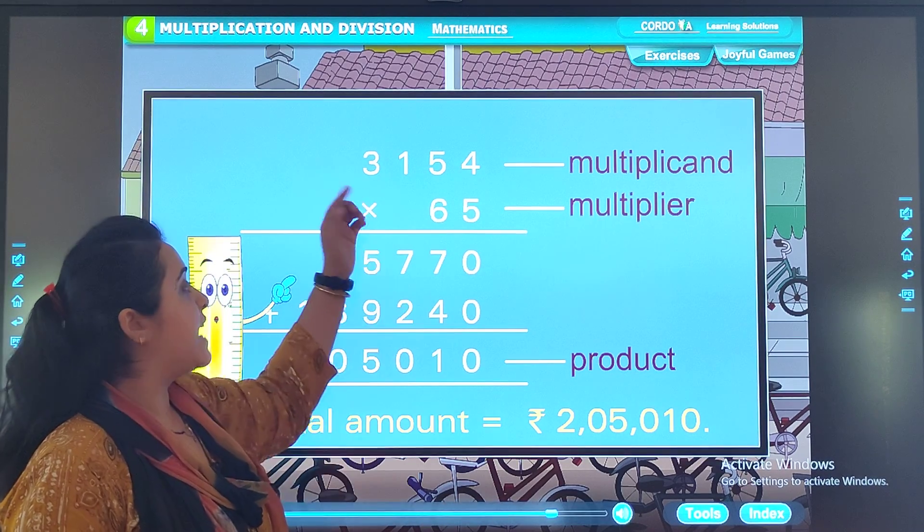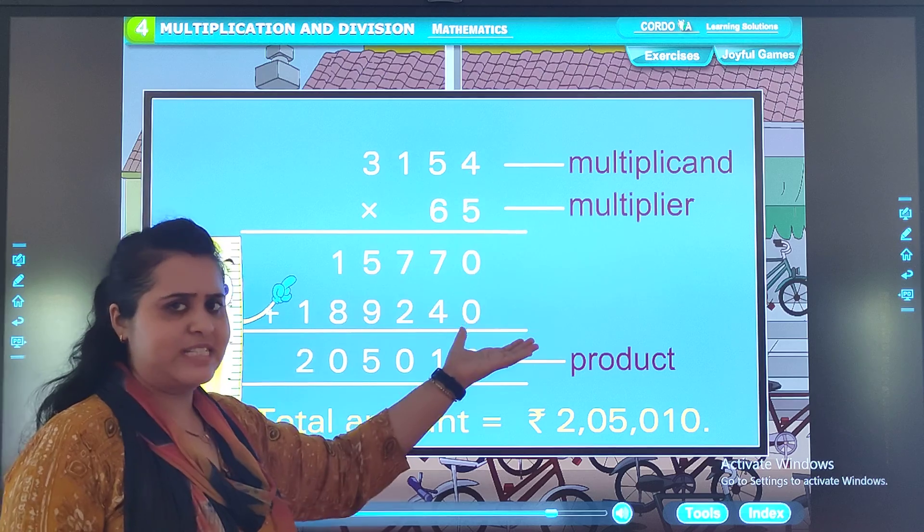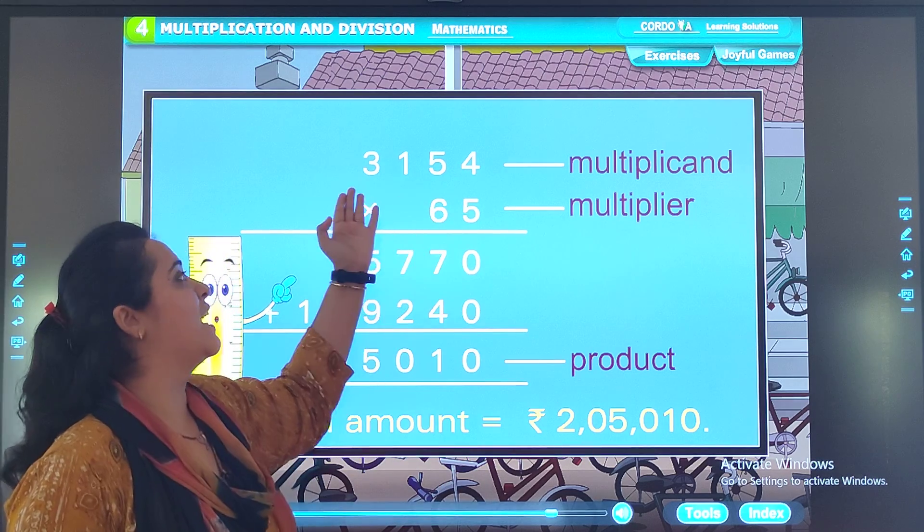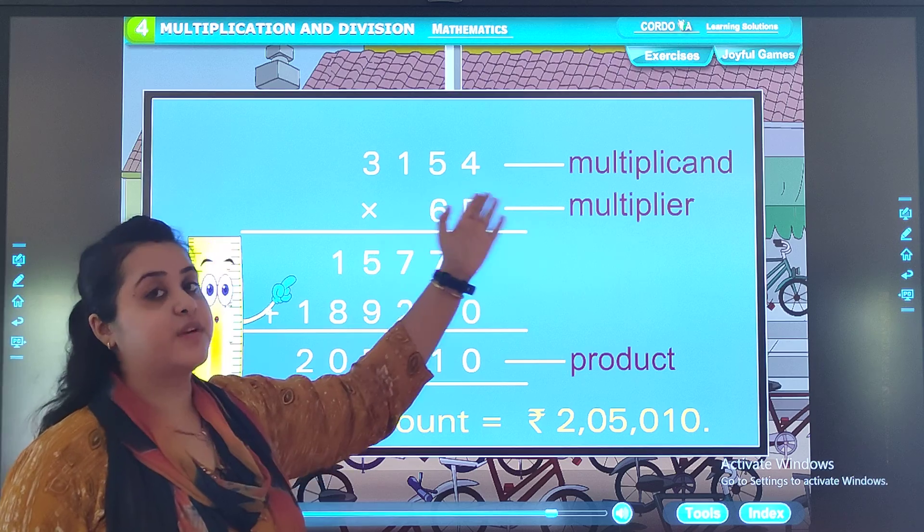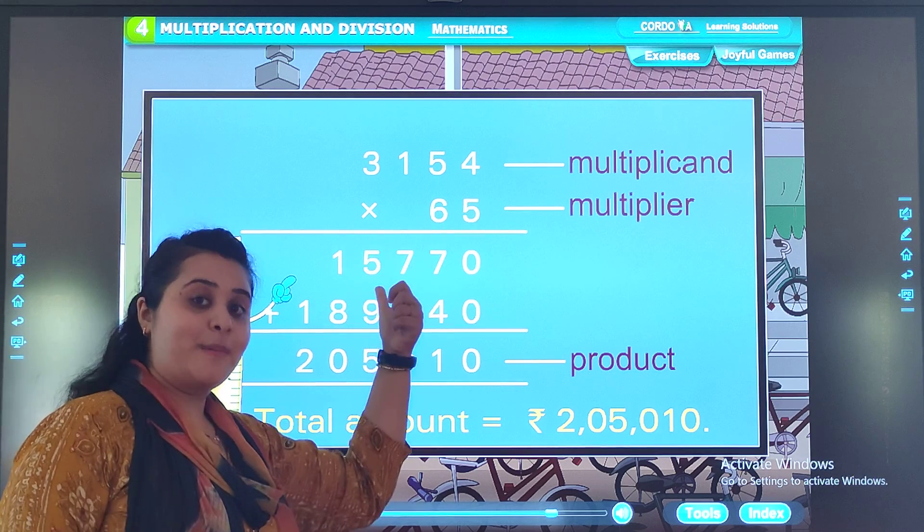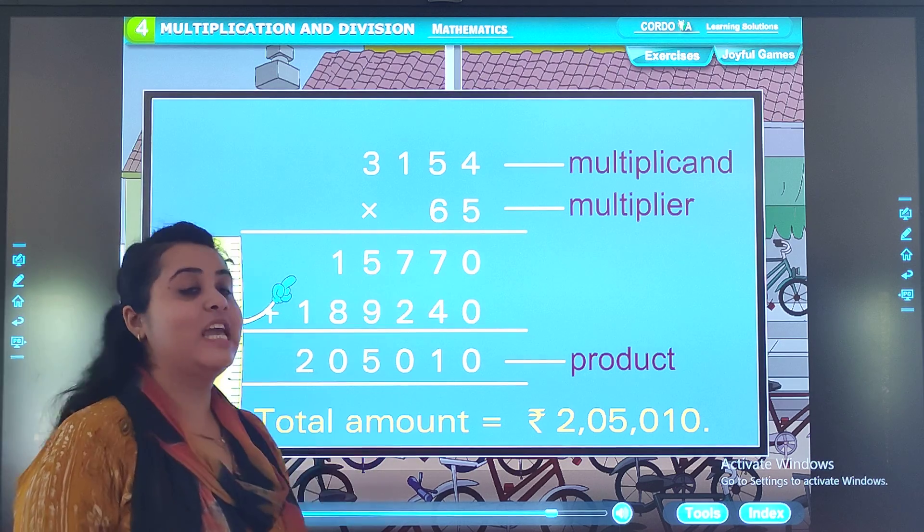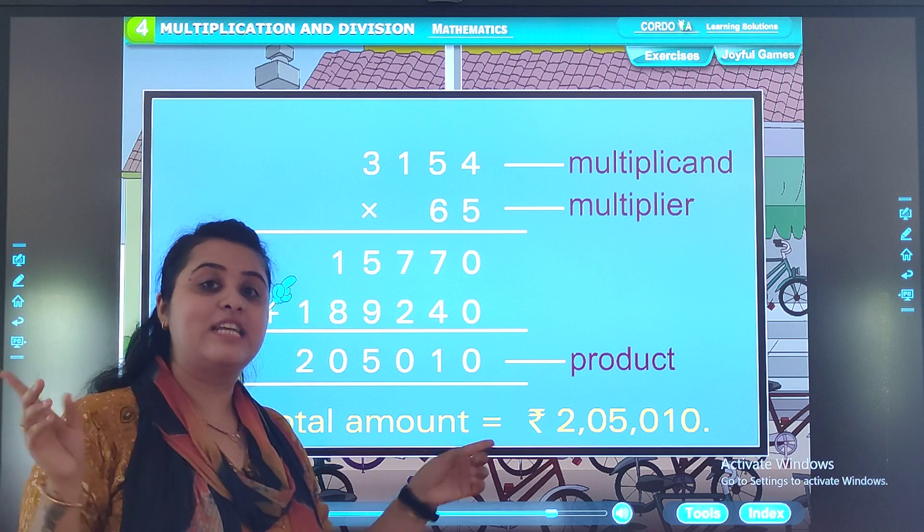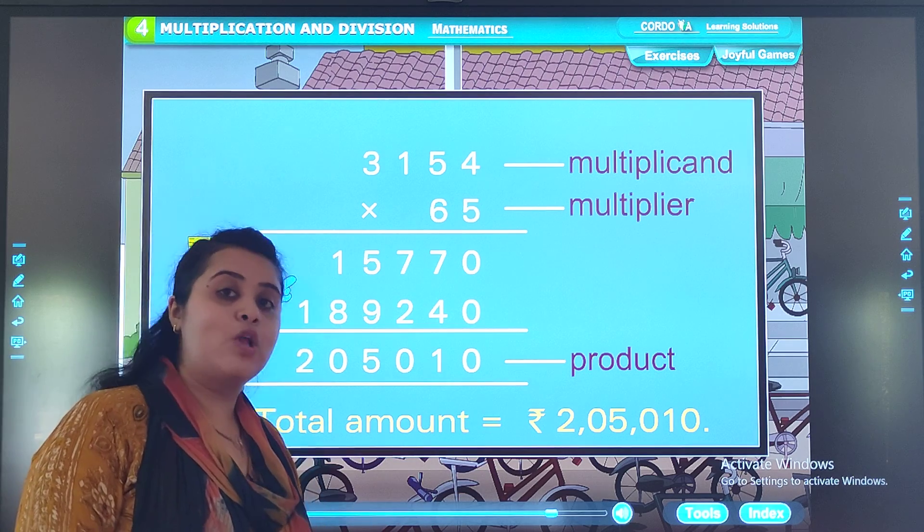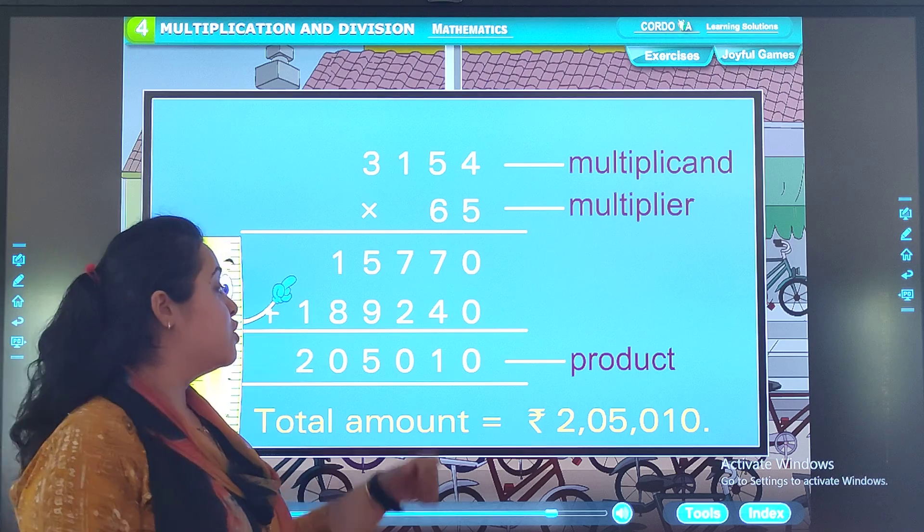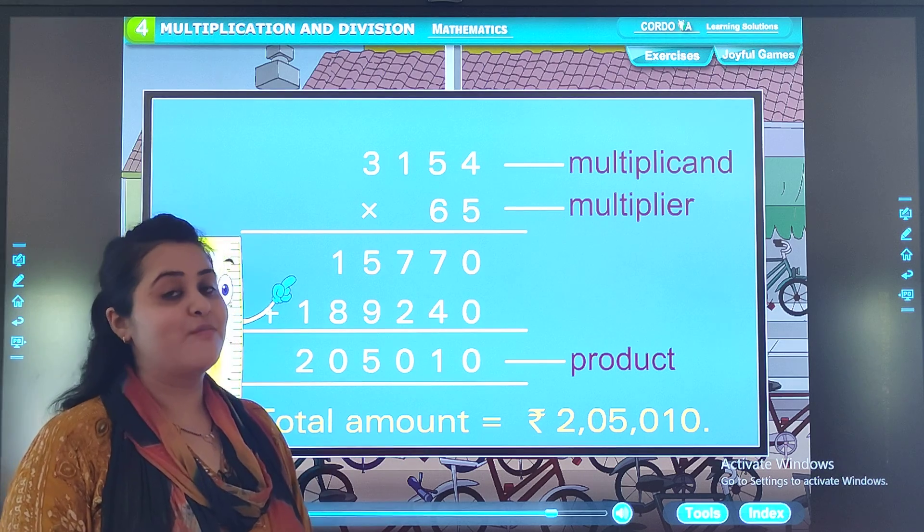We know that the cost, for example, in this, we know that the cost of one cycle is 3,154 and that meant in all are 65 cycles. So we need to find the cost of whole 65 cycles. So my answer will be my product.